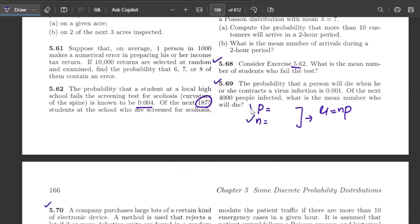We have n, we have p, we can put the values here and on the basis of it we will find the value of the mean of the number of students who fail the test. So μ equal to np is the formula which we will use here.